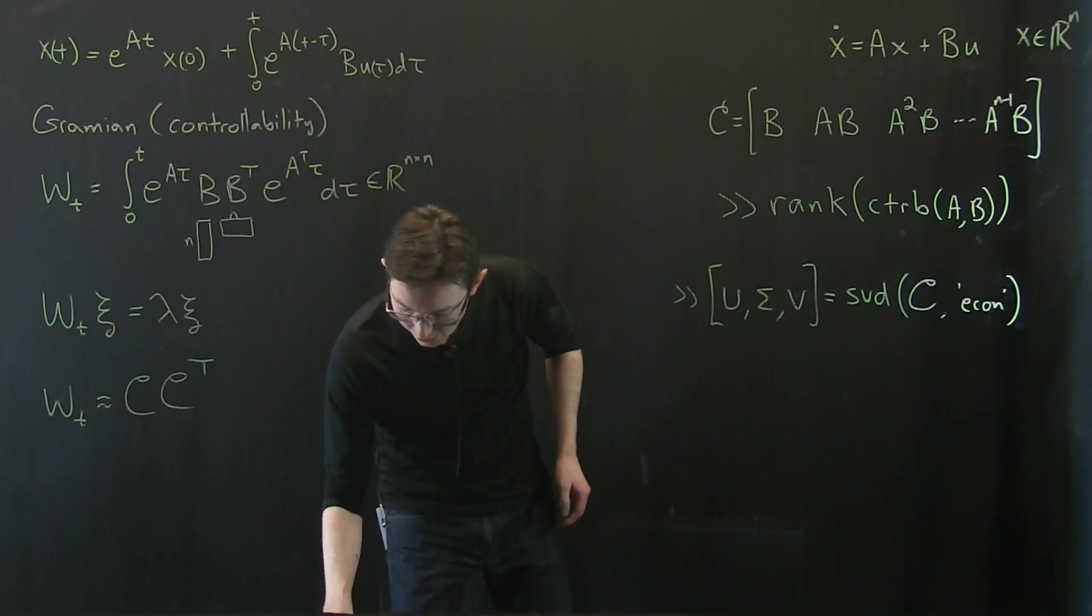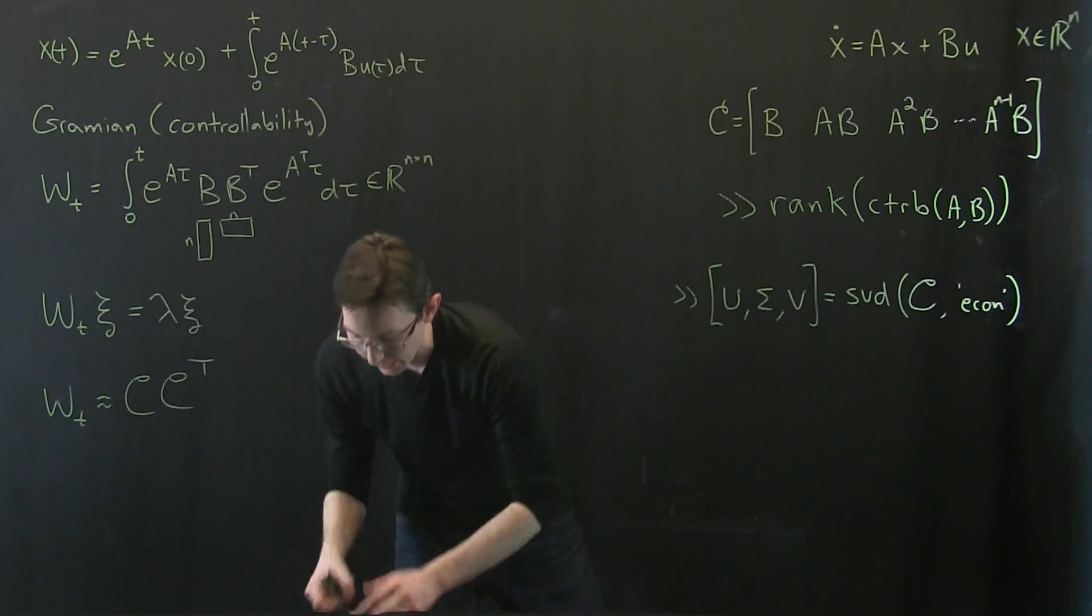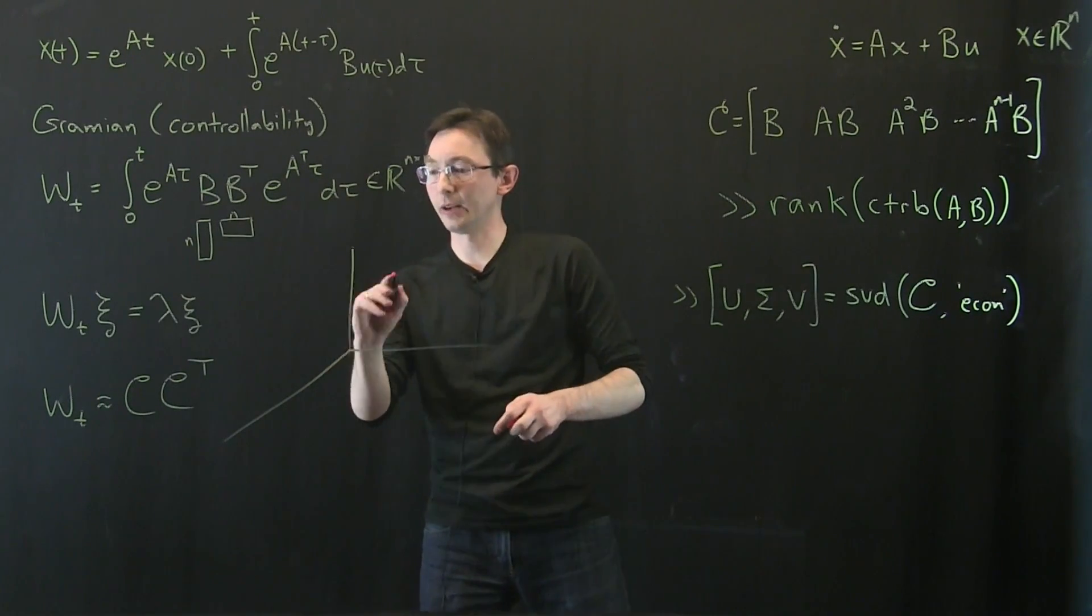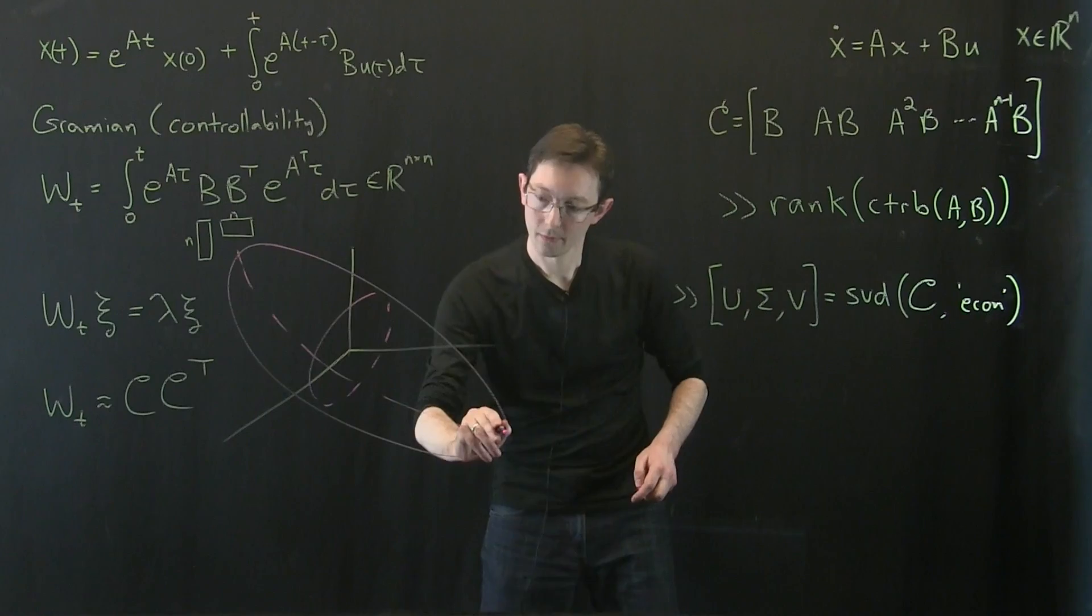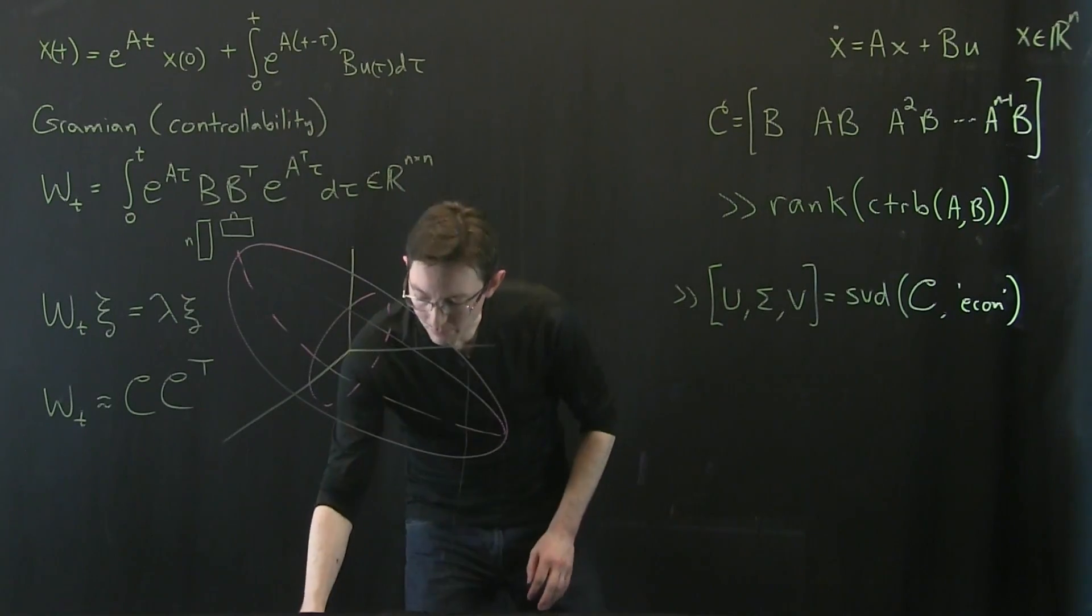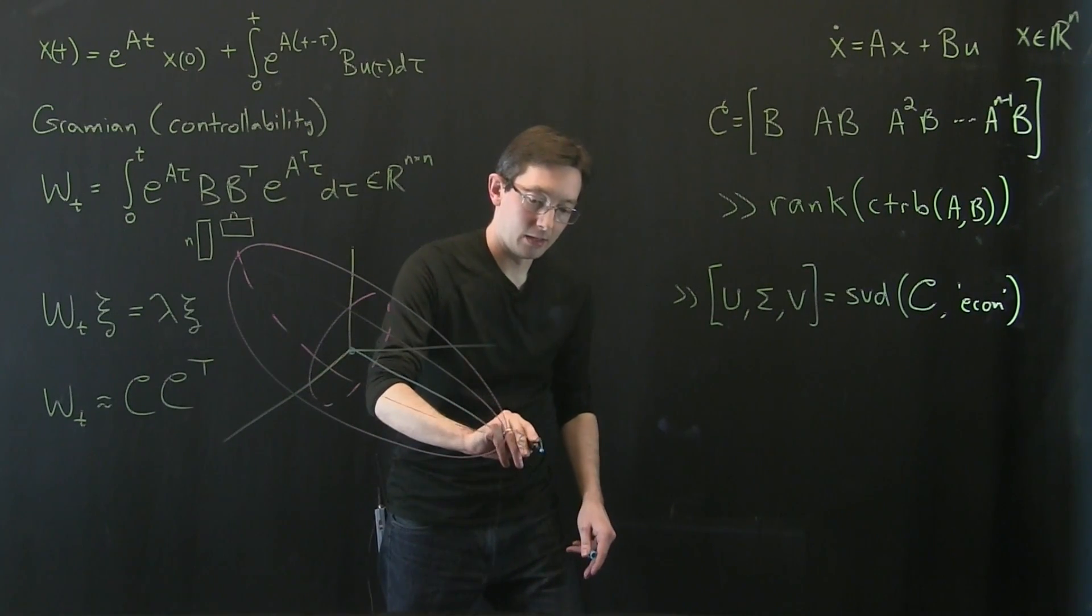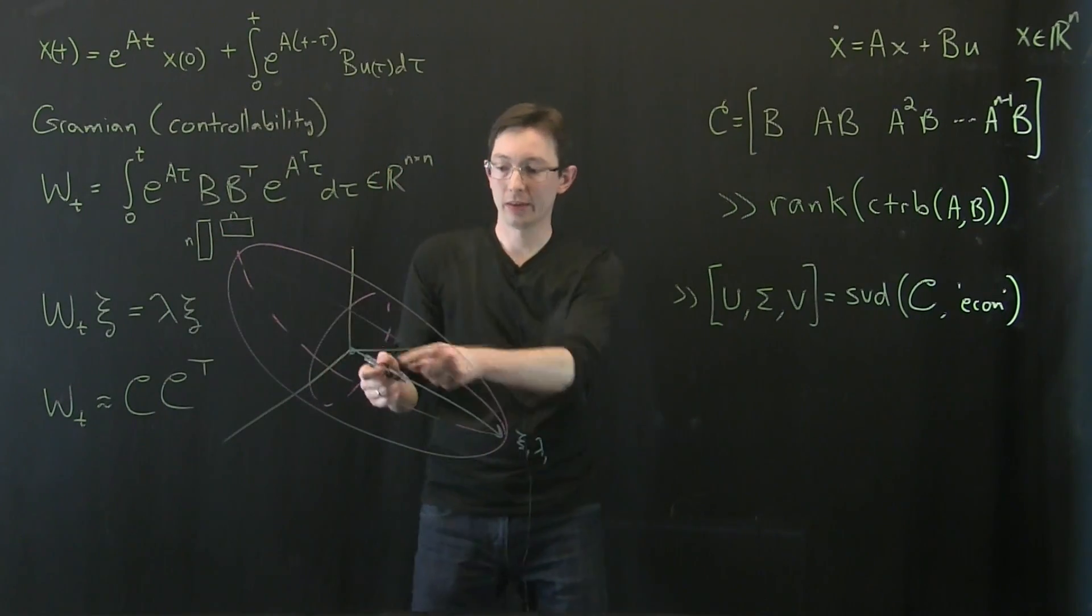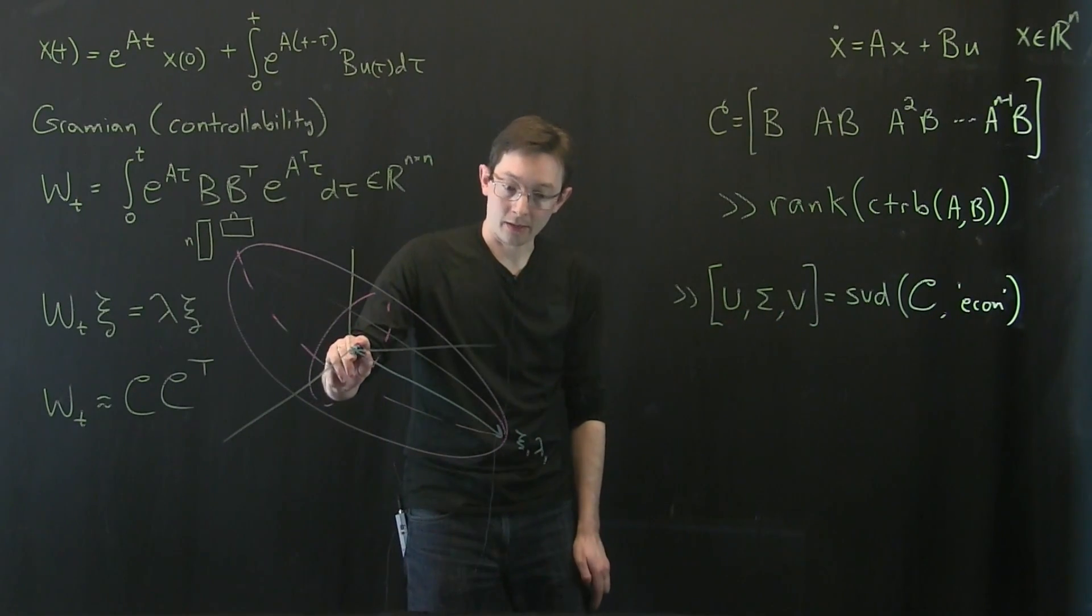And then what you can do is essentially take these controllable directions, and what they define is some energy ellipsoid. So this is really neat. I want to just draw, I'm going to draw this in R3, but you'll get the idea. So what I can do is draw this energy ellipsoid in R3, where essentially my most controllable direction, so let's say I go in the xi1 direction. So this is xi1 lambda1 or sigma1, whatever you want to call it. I can go farther. So this ellipsoid, the principal axes of this are my singular vectors of this controllability matrix.